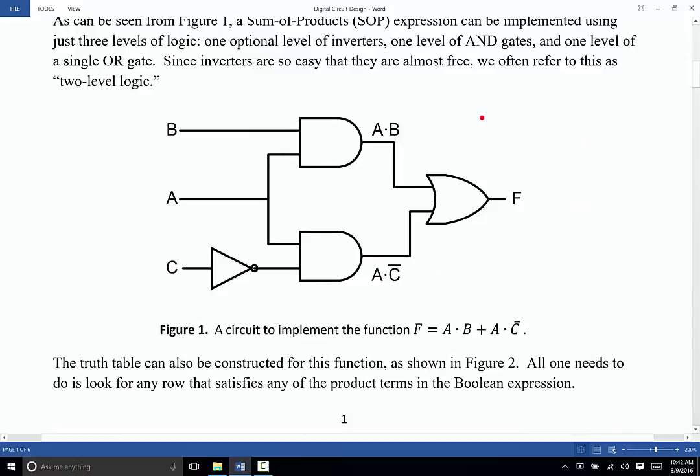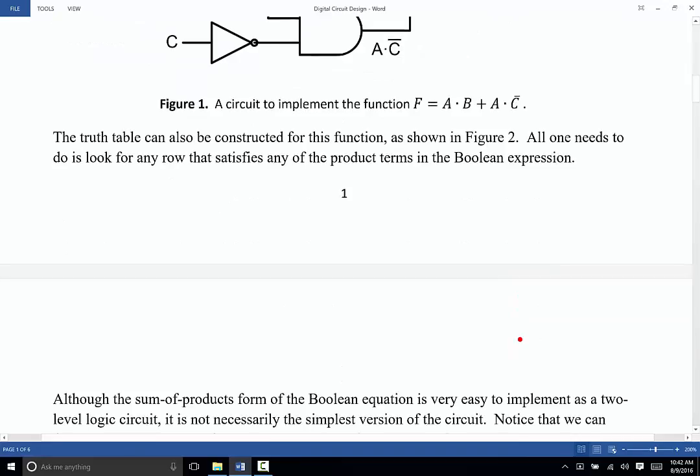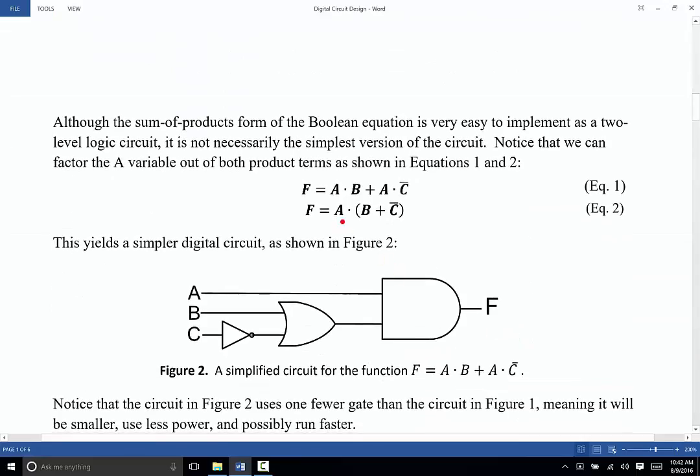Now, although this sum of products expression definitely meets the requirement of satisfying that particular equation, it may not be the most efficient way of possibly doing it. And in particular, if I look at this equation, I can see that there's an A in both of these terms. So what would happen if I factored the A out of both of those terms? You can see here that I have A and B or A and NOT C. Exactly equivalent would be A and the quantity B or NOT C. Using our Boolean algebra theorems from a previous discussion, we can go directly from equation 1 to equation 2. And from equation 2, we can draw the circuit that's shown in figure 2.